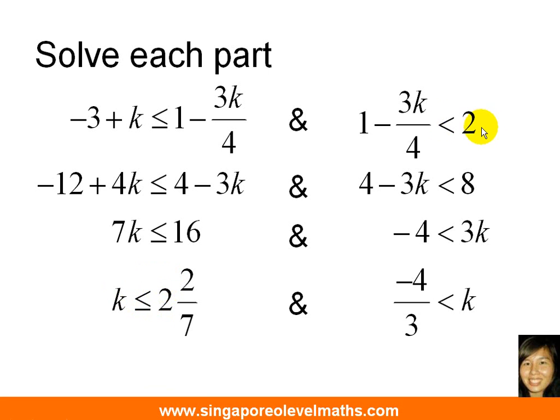I repeat the same procedure for the second part. I multiply everything by 4. And I move my unknown to the right hand side this time because this is the side which will give me a positive k, and I get this other inequality answer.